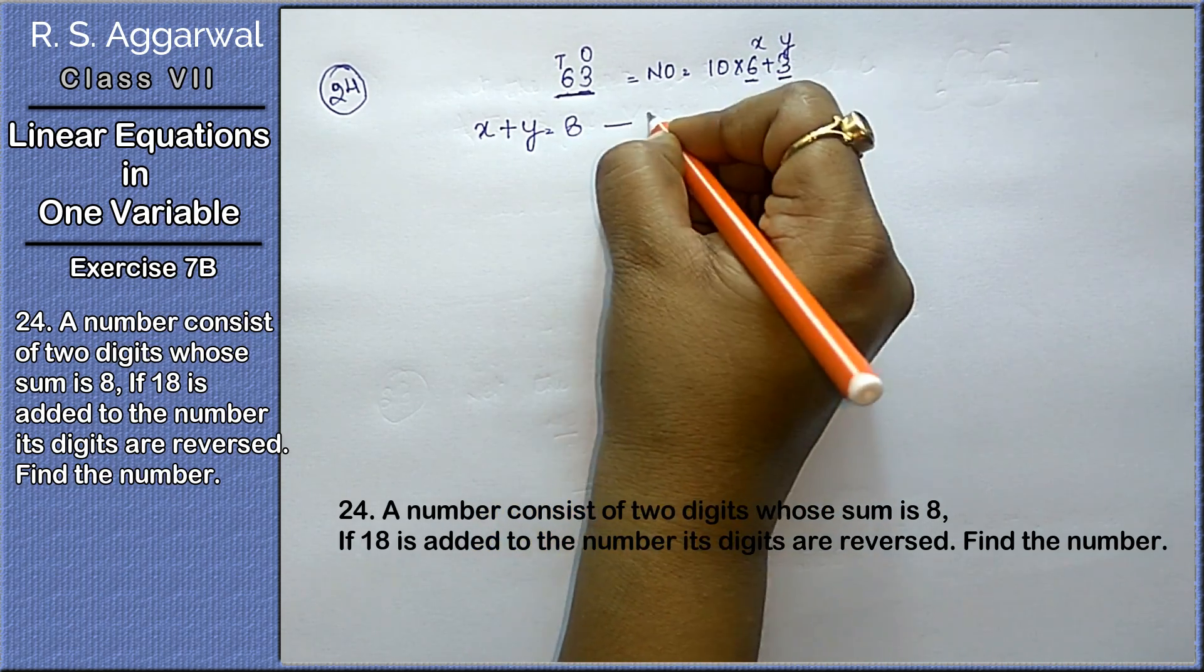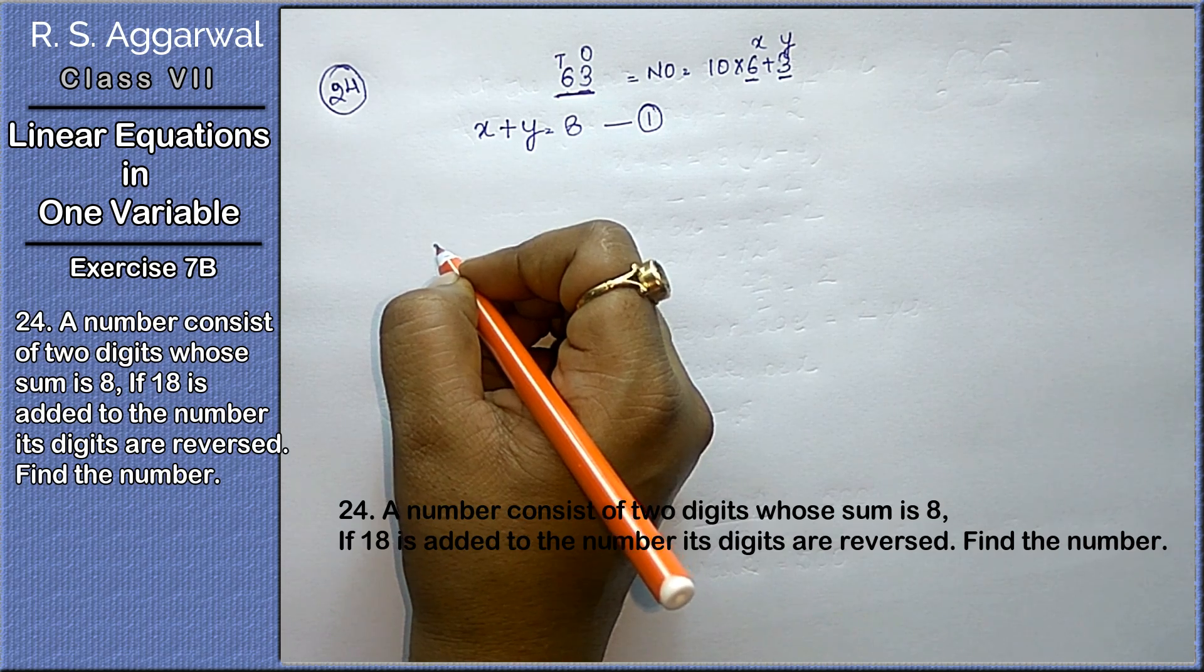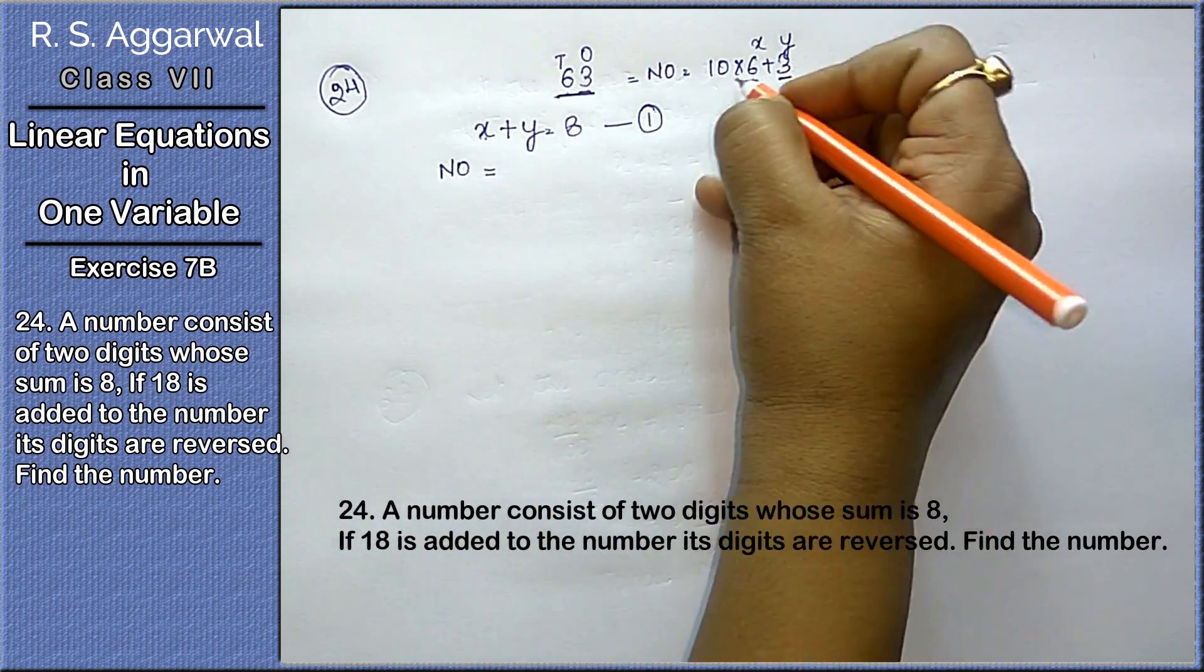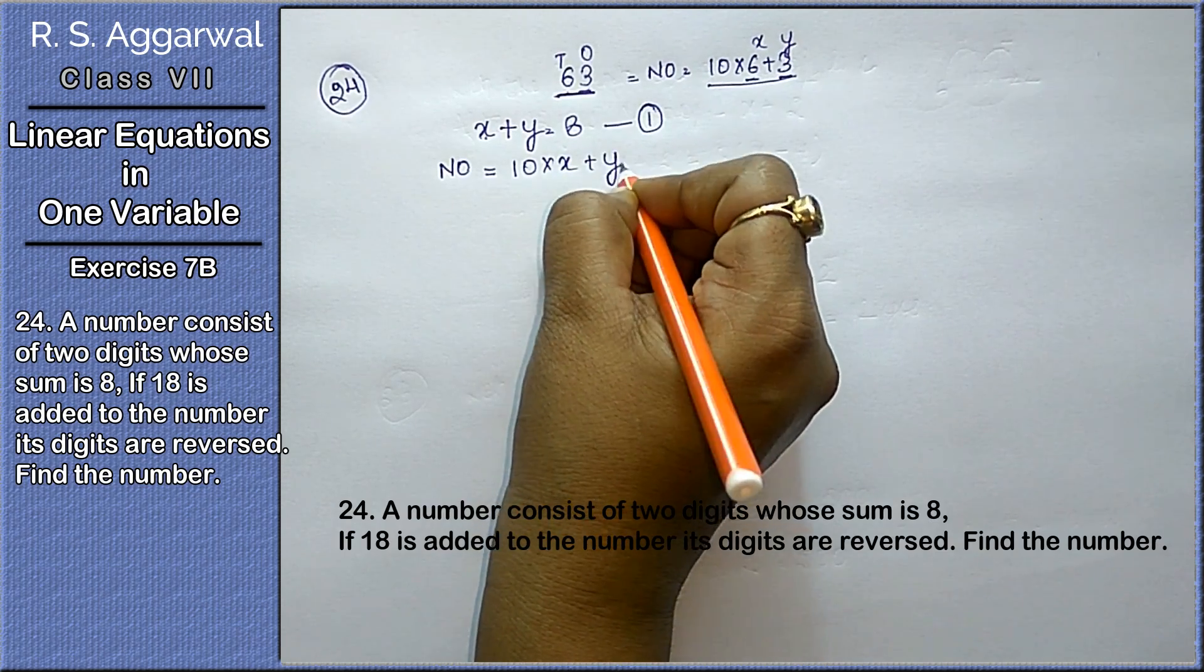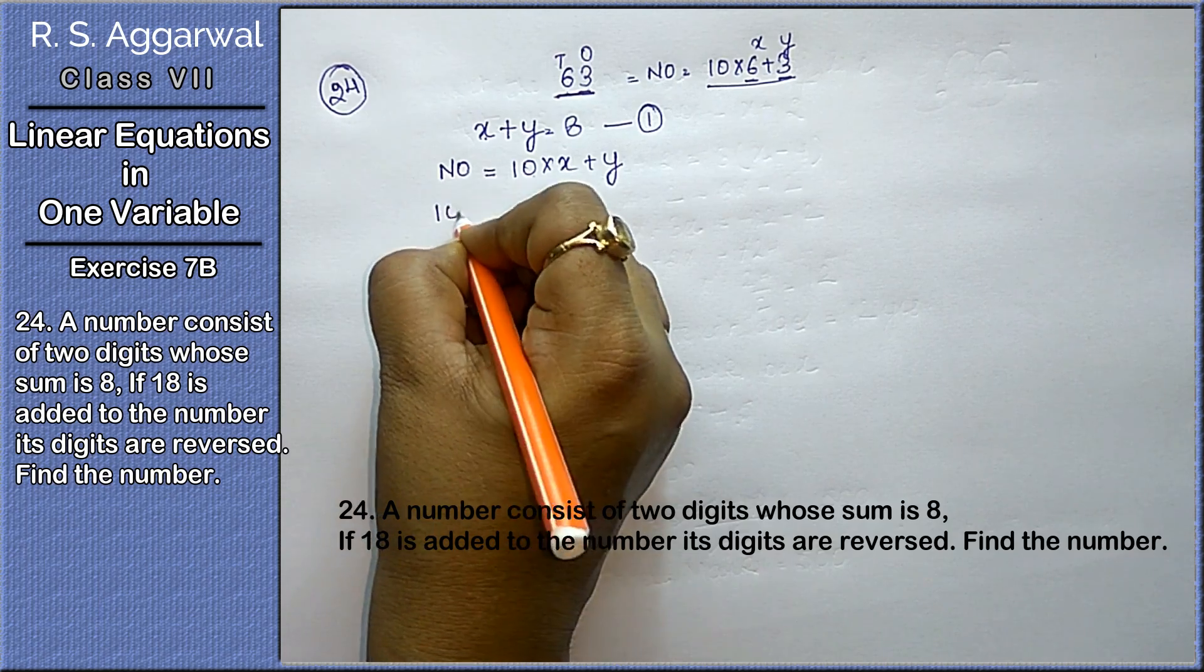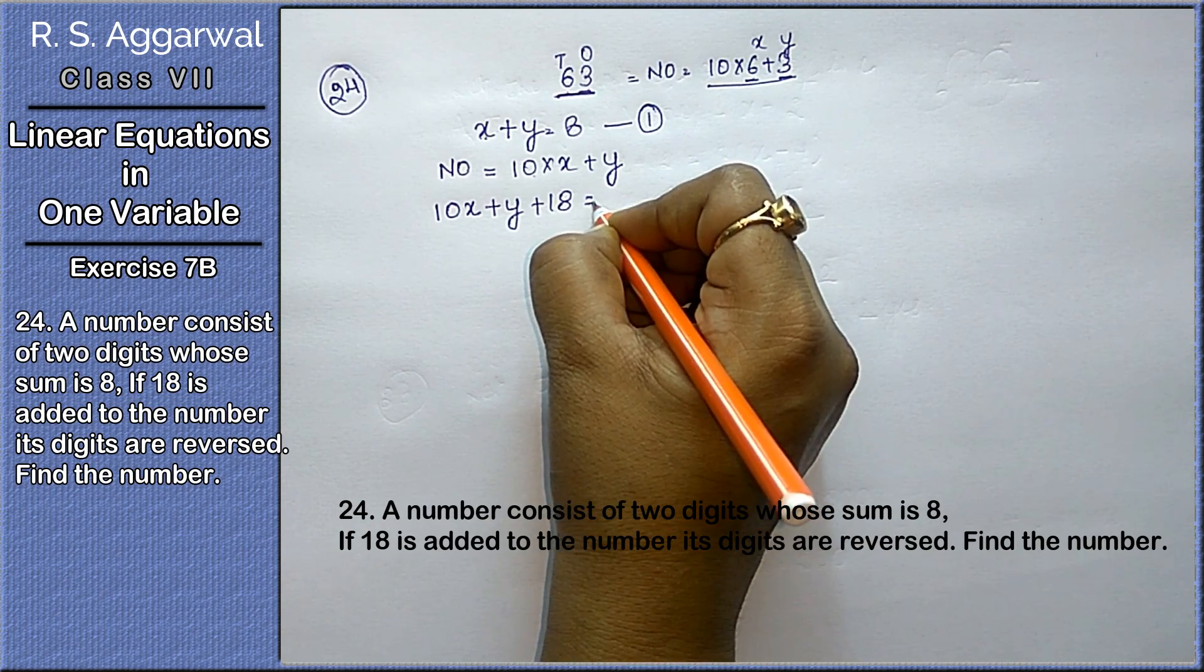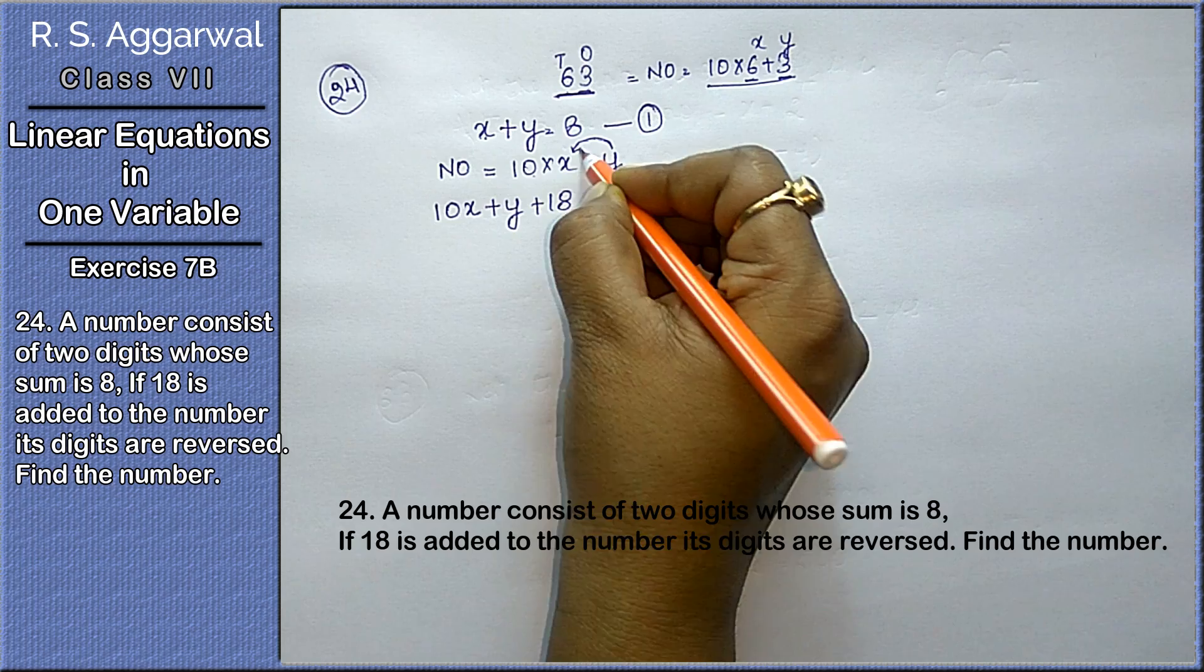6 is not known, 3 is not known, so x plus y equals to 8. This is our first equation, friends. Now, if 18 is added to the number, the number is 10x plus y. If 18 is added to this number, 10x plus y plus 18 equals to the digit will get reversed.